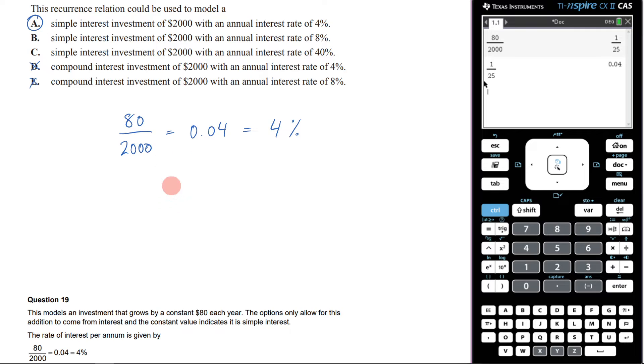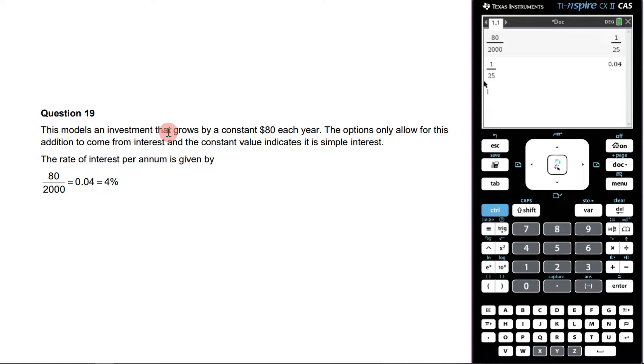If we come and look at our examiner's report here, it says this model is an investment that grows with a constant $80 each year. The options only allow for this addition to come from interest and the constant value indicates it is simple interest. The rate of the interest per annum is given by 80 on 2,000 is equal to 0.04, which is 4%.